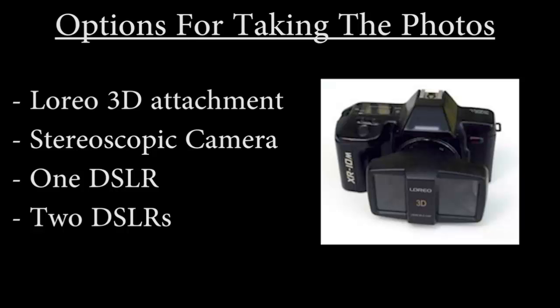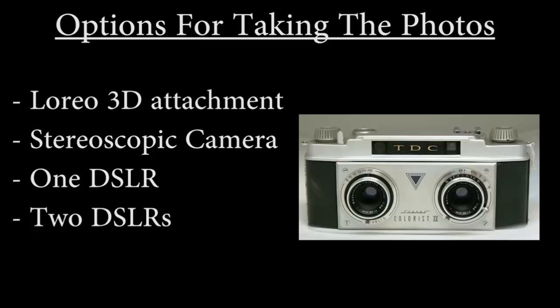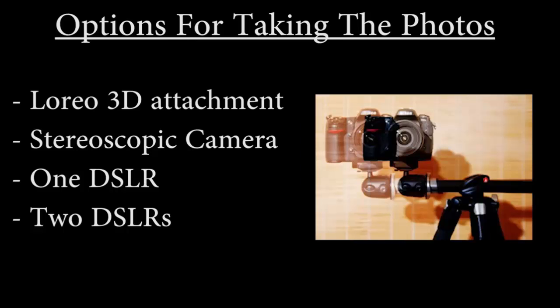There's a little lens attachment that you can put on the front of your DSLR. Another thing you can do is just get a 3D stereoscopic camera — it has two separate lenses so the image quality will be better. The next way to do it is with a single SLR, where you can take two pictures side by side and then combine them later on the computer.